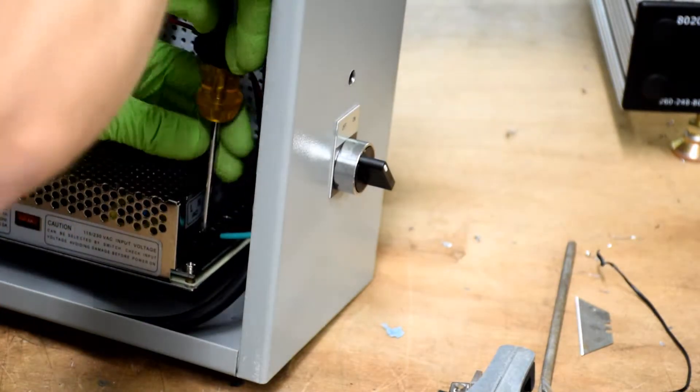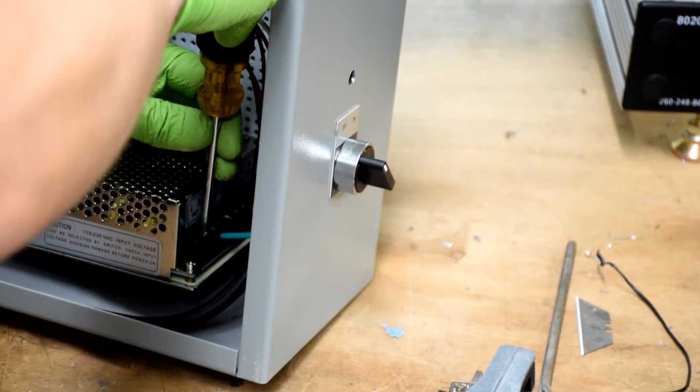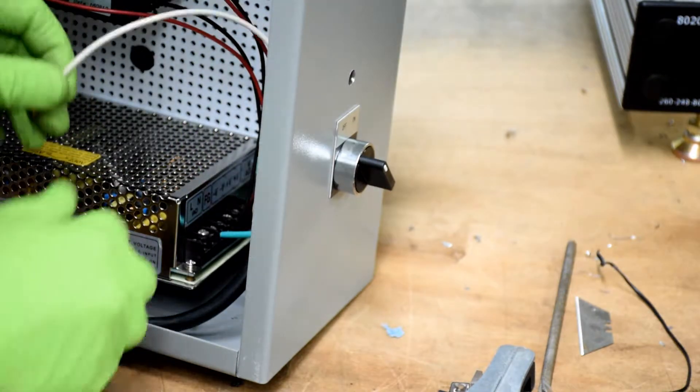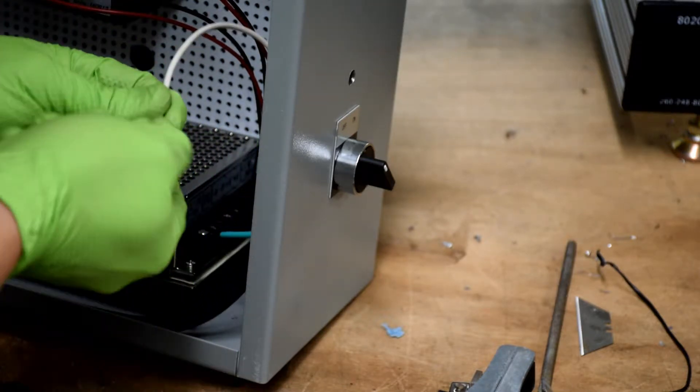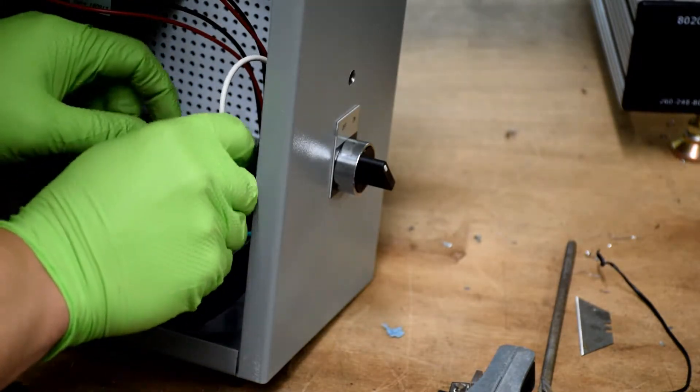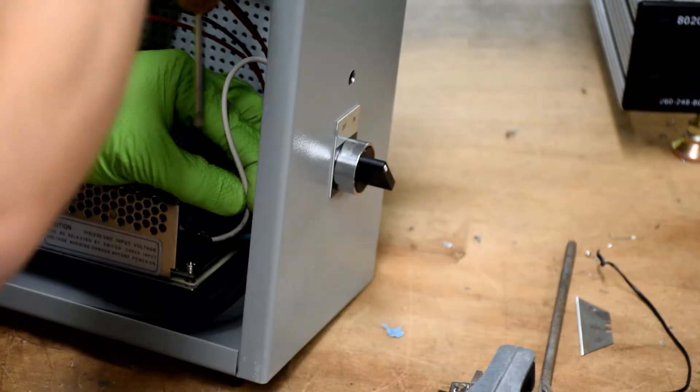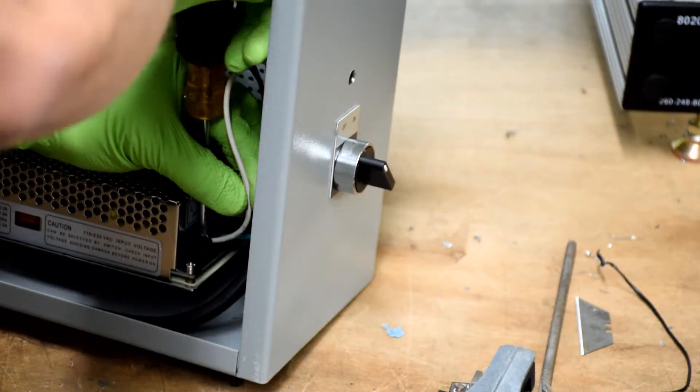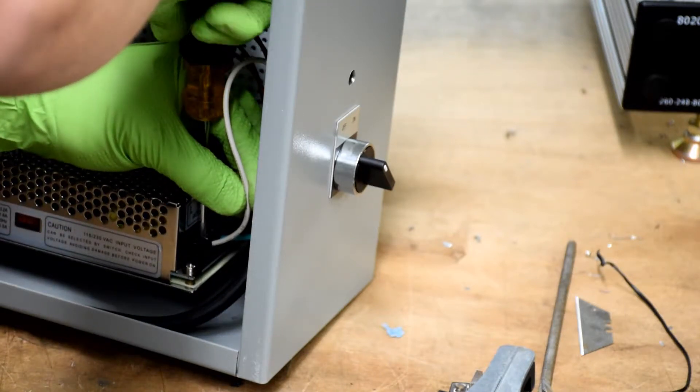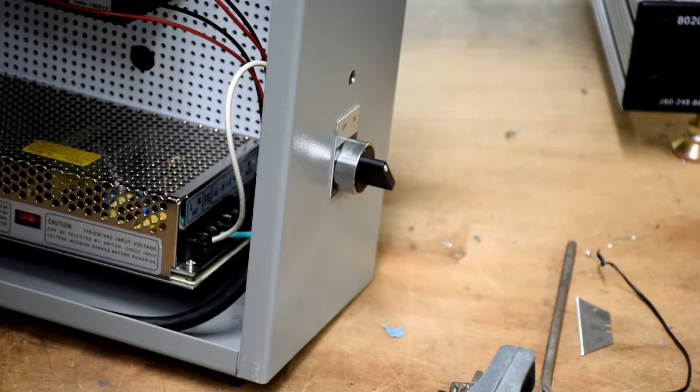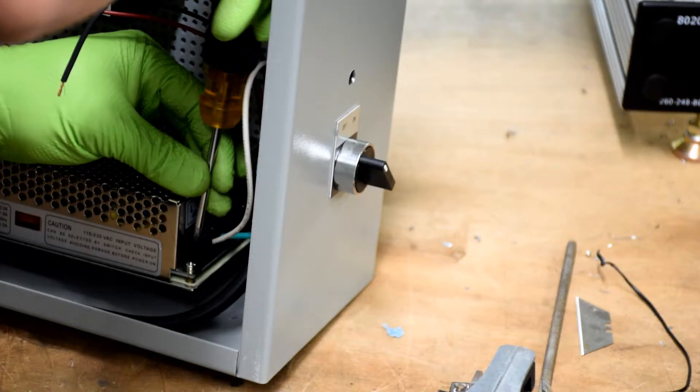First, I'm going to run the white wire into the neutral terminal on the power supply. And that's the terminal that says N. After you tighten your connections, always give your wires just a little tug just to make sure that they're in there and seated properly. You really don't want any loose connections.